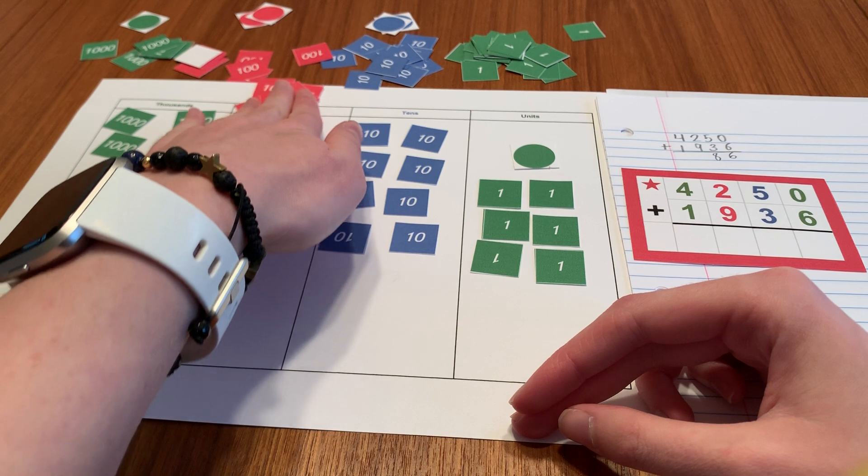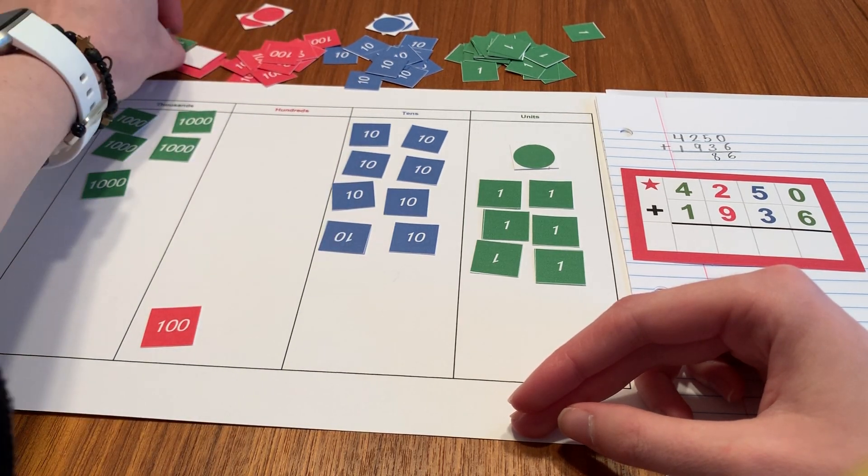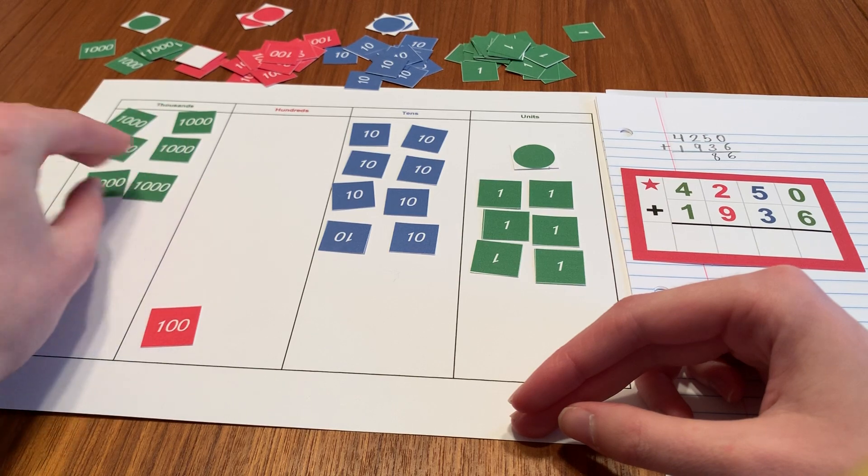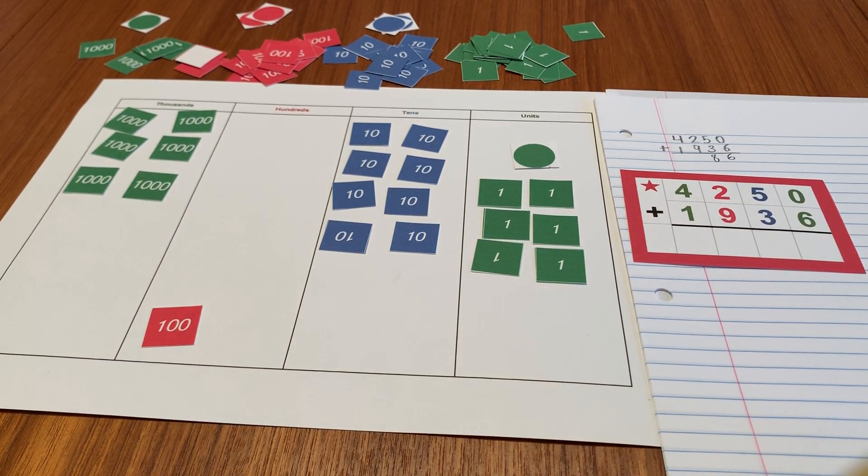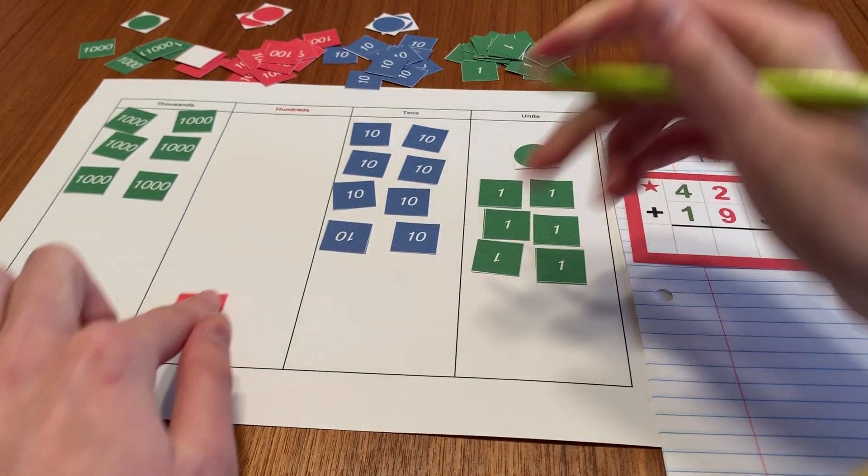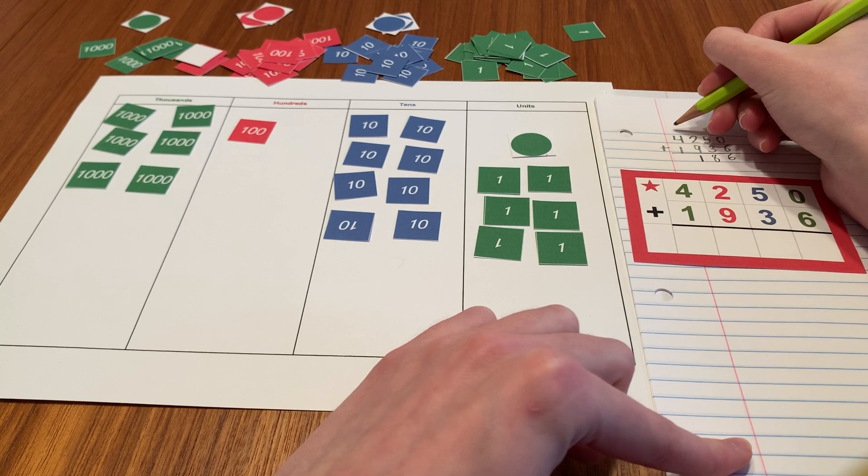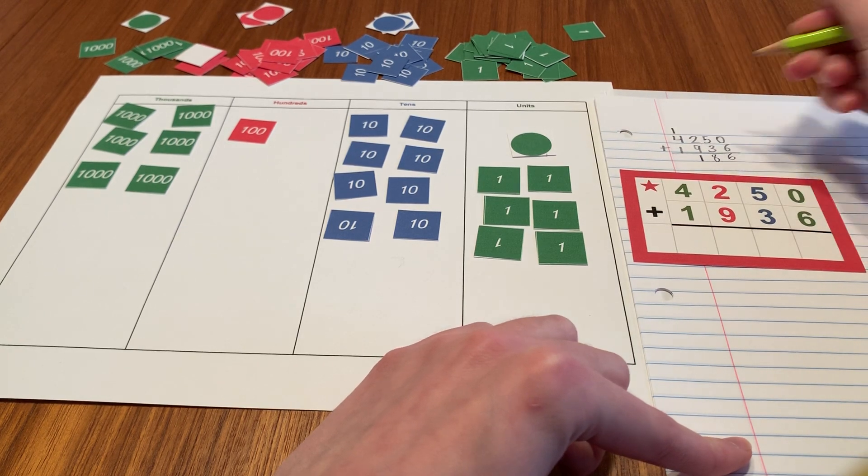So I'm going to go to the bank and make an exchange. I'm exchanging ten hundreds for one thousand. And here's how I write that. I put a one here for my one hundred that's left. And I made a new thousand. So that goes right there. And then I count those up.